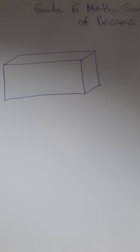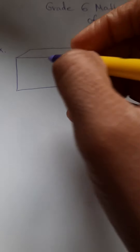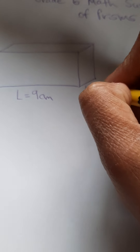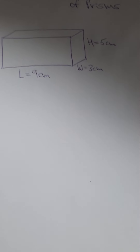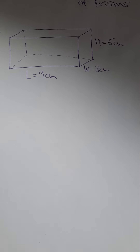Hi guys, welcome back to the channel. Jag here — in today's class we're going to continue with our Math 6 content and go through some more questions on surface area of prisms. I've drawn a rectangular prism here and I'm going to give it some values: 9 centimeters for the length, 3 centimeters for the width, and 5 centimeters for the height. I'll also draw dotted lines to show that the prism is 3D.